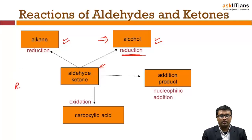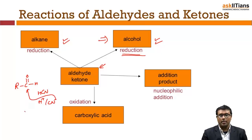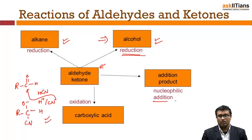For the addition product, consider an aldehyde undergoing nucleophilic addition. For example, with HCN — which dissociates into H⁺ and CN⁻ — the CN⁻ is a nucleophile and undergoes nucleophilic addition. That's why aldehydes and ketones are said to undergo nucleophilic addition reactions, not substitution reactions. It's an addition reaction where the cyanide group adds to give the addition product.